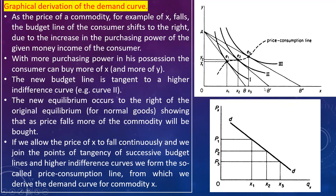This new budget line will be tangent to a higher indifference curve — the second curve. It is tangent and the point of equilibrium is E2. At E2, the quantity consumed of commodity X is X2, which is more than X1, and of Y is Y2, which is more than Y1. So, due to the fall in price, the consumer consumes more quantity of both X and Y.